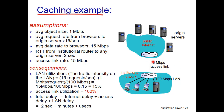LAN utilization: traffic on the LAN is 15 requests/sec × 1 Megabit = 15 Mbps, divided by the LAN rate of 100 Mbps, giving 0.15 — that is 15% utilization, which is a very small amount.